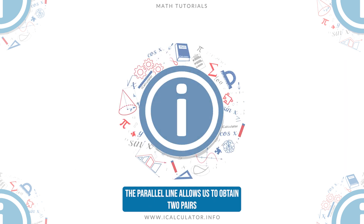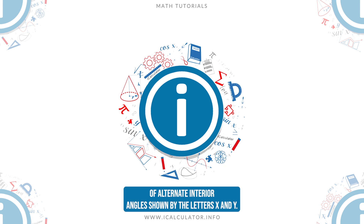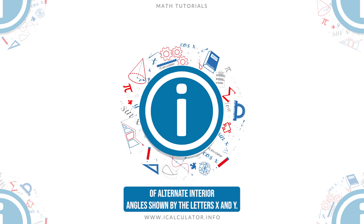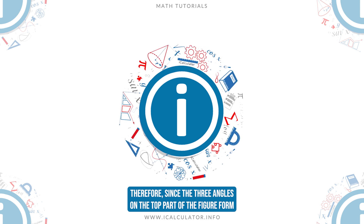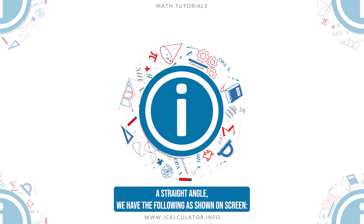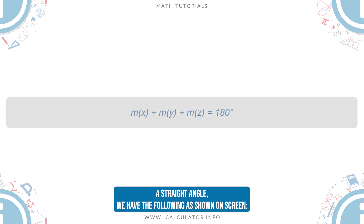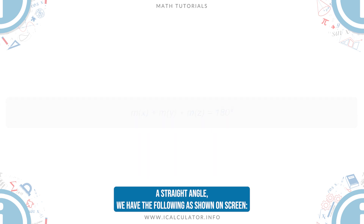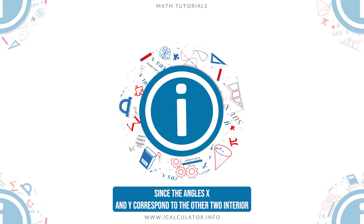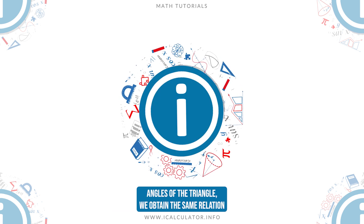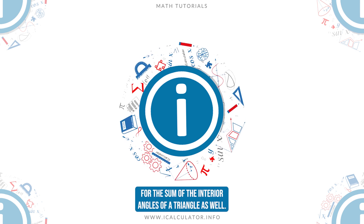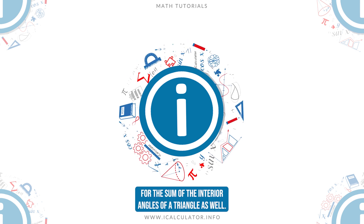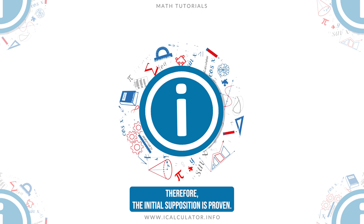The parallel line allows us to obtain two pairs of alternate interior angles, shown by the letters x and y. Therefore, since the three angles on the top part of the figure form a straight angle, we have the following as shown on screen. Since the angles x and y correspond to the other two interior angles of the triangle, we obtain the same relation for the sum of the interior angles of a triangle as well. Therefore, the initial supposition is proven.